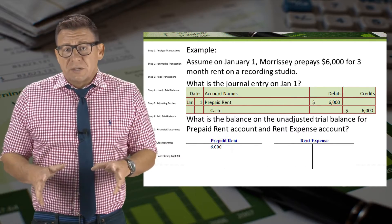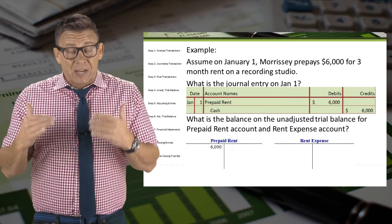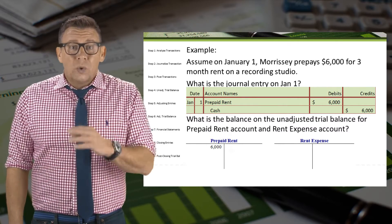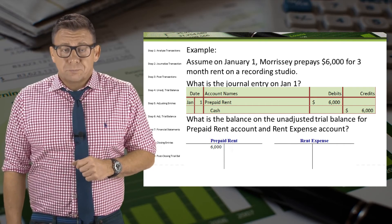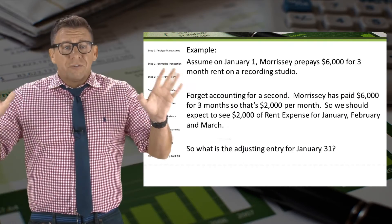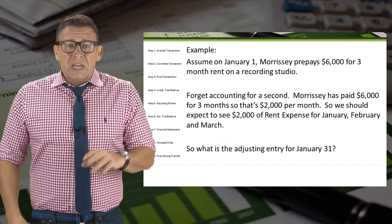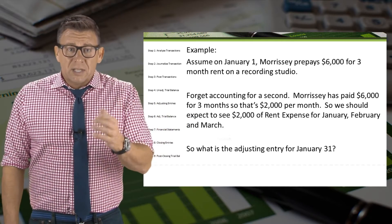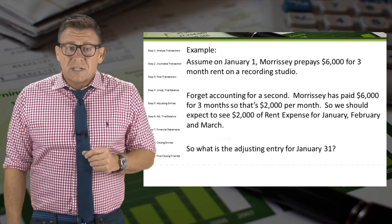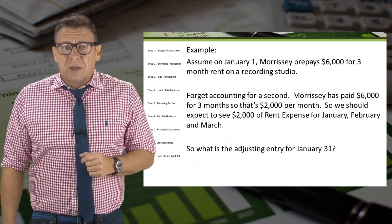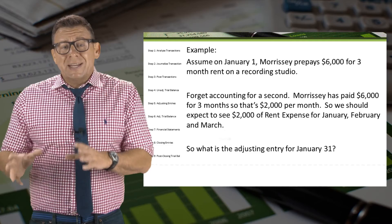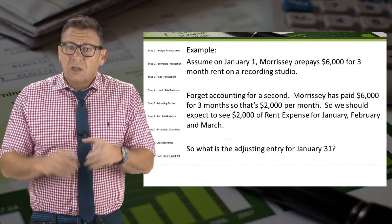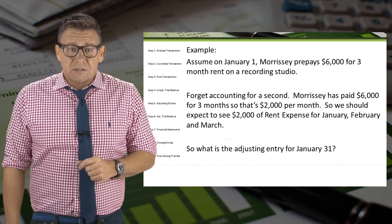The unadjusted balance for prepaid rent at the end of the month is still $6,000, and as of yet, no rent expense has been recorded. Forget accounting for a second — we know those balances aren't correct. Morrissey paid $6,000 for three months, so that would be $2,000 a month. We should expect to see $2,000 of rent expense for January, February, and March. This is why we need to adjust these accounts.